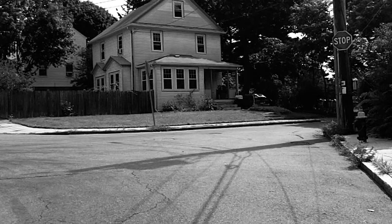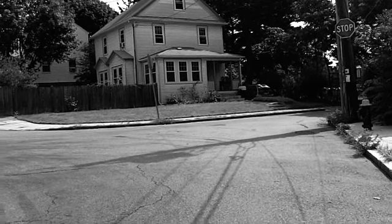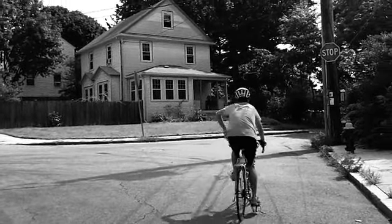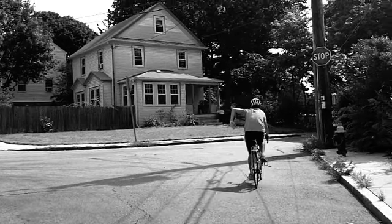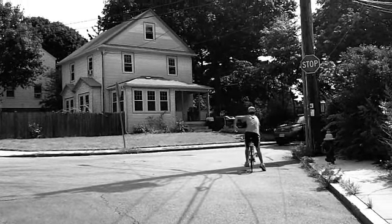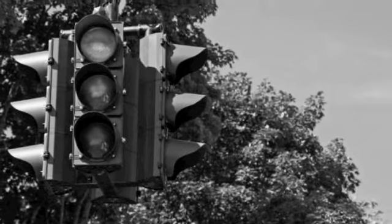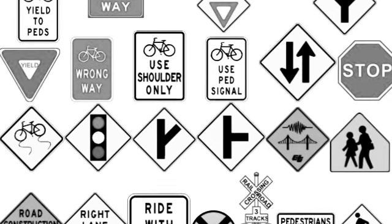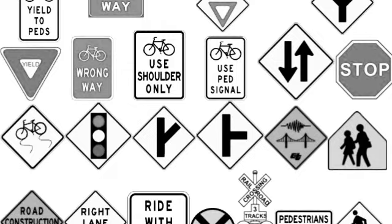For example, there's a stop sign ahead — Johnny, you'll have to stop for it. But how do bicyclists show it when they don't have blinkers? As bicyclists, you're expected to observe stop signs, red lights, one-way streets, yield right-of-way, signal turns, and in general, obey the same rules of the road that motorists follow.